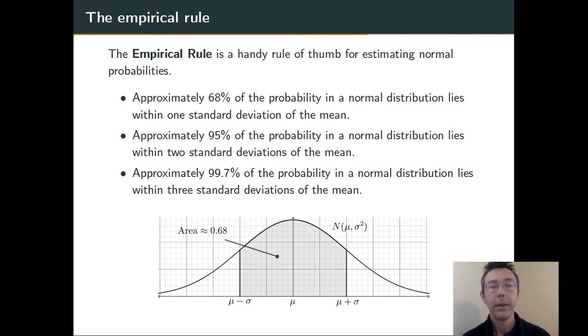In terms of area, that's meaning that those proportions of the area under the graph of any normal curve are contained within those regions. For example, within one standard deviation of the mean from μ - σ to μ + σ, we get 68% of the probability, 68% of the area. So that shaded area is about 68% of the total area.